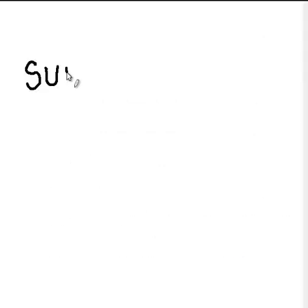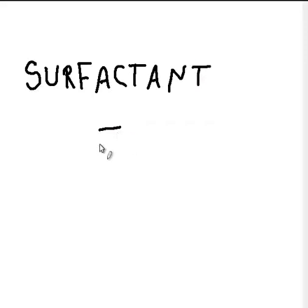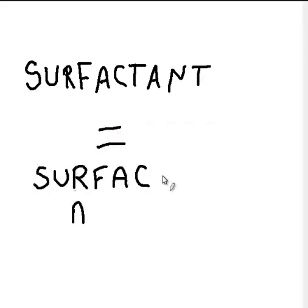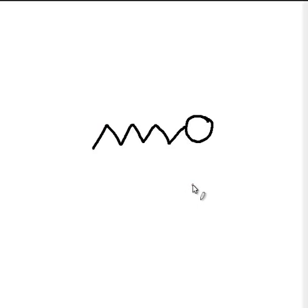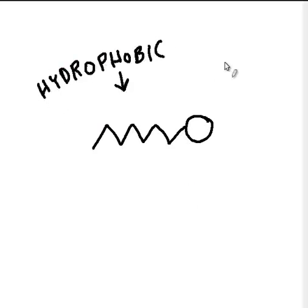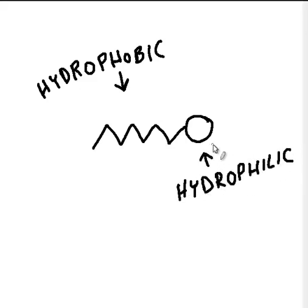The term surfactants stands for surface active agent. This refers to the fact that in solution, surfactant molecules migrate to the surface and align themselves in a manner which reduces surface tension. The reason surfactants behave in this manner is because of the way their molecule is structured. A portion of the molecule is hydrophilic, or water-loving, while another portion is hydrophobic, or water-hating. You might also hear them referred to as lipophilic, oil-loving, or lipophobic, oil-hating.